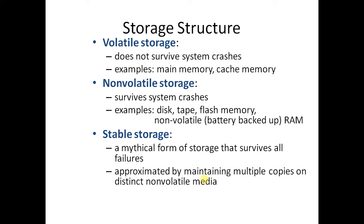Storage is also divided into various categories. Number one, we call it volatile — like your RAM. It does not survive system failures; as soon as power goes off, all the data is lost. Non-volatile is where you can keep your data persistently — that is hard disk, tape, DVD, pen drive, whatever the case.